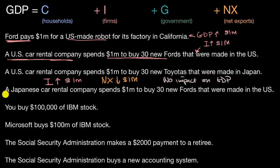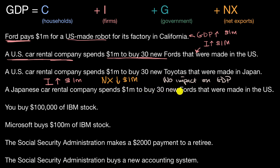Now this next scenario: a Japanese car rental company spends $1 million to buy 30 new Fords that were made in the United States — almost a symmetrically opposite scenario. We would not add to investment here because this is a Japanese car rental company, and we're calculating GDP for the United States. But because the US would export these 30 new Fords, that would add to net exports — net exports would go up by $1 million.